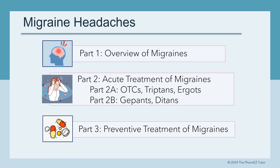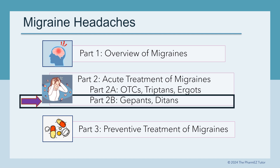Hi again everybody. In our last installment, Part 2a, we discussed the drug classes used in the acute treatment of migraines — the OTCs, triptans, and ergots. Now we will move on and talk about the newer drug classes that have been recently approved for the acute treatment of migraines: the G-PANs and DITANs.